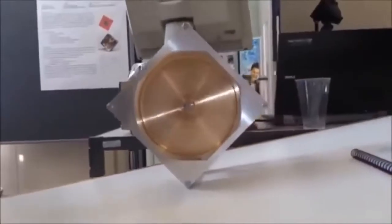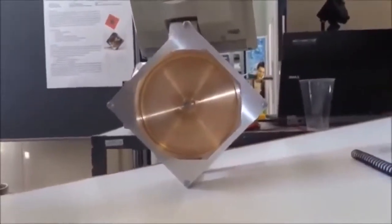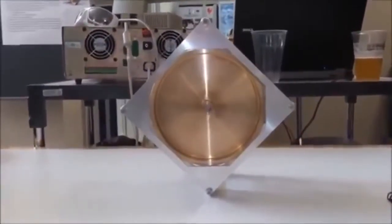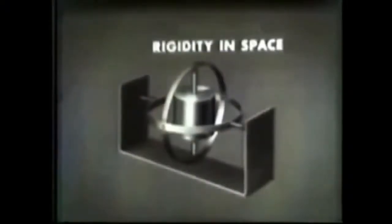A spinning gyro has two important properties: precession and rigidity in space. As for rigidity in space, the gyro maintains its axis in relation to space and not to the surface of the earth. Let's just replay that part and let it really sink in what he's saying. The gyro will maintain its position in space no matter whereabouts on the earth it is.